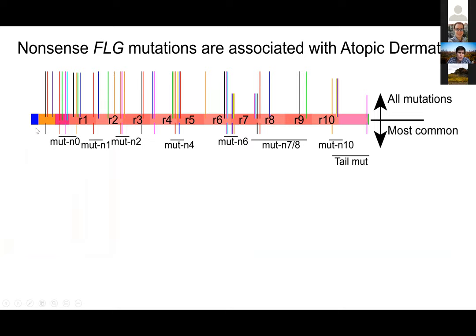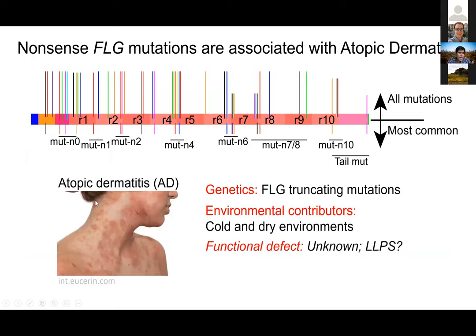These mutations lead to what is strongly associated with atopic dermatitis — the skin does not look normal. It's highly environmentally dependent, which was intriguing to us because phase separation behavior is very similarly stimulus-dependent. People with this disorder have skin that is not happy when they go to cold or dry environments. The functional defect, however, wasn't clear at the time, and we suspected that liquid-liquid phase separation defects in filaggrin behavior might be implicated.